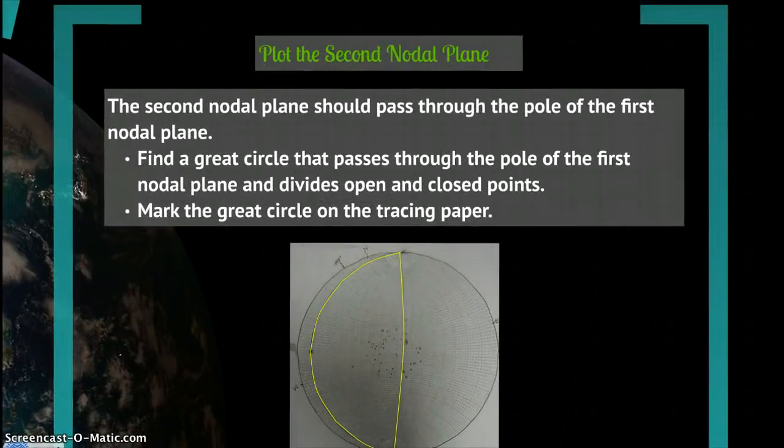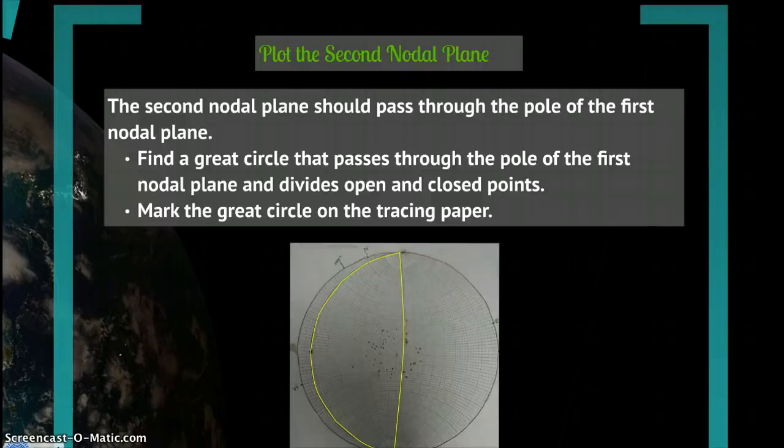Now you'll plot the second nodal plane. It should pass through the pole of the first nodal plane. Then find a great circle that passes through the pole of the first nodal plane, marked by an X, and divides open and closed points, if possible.